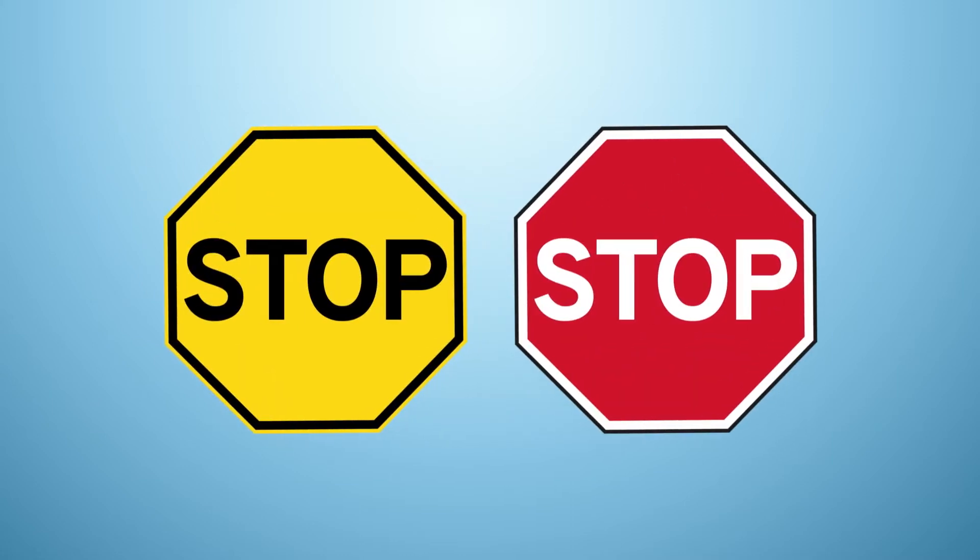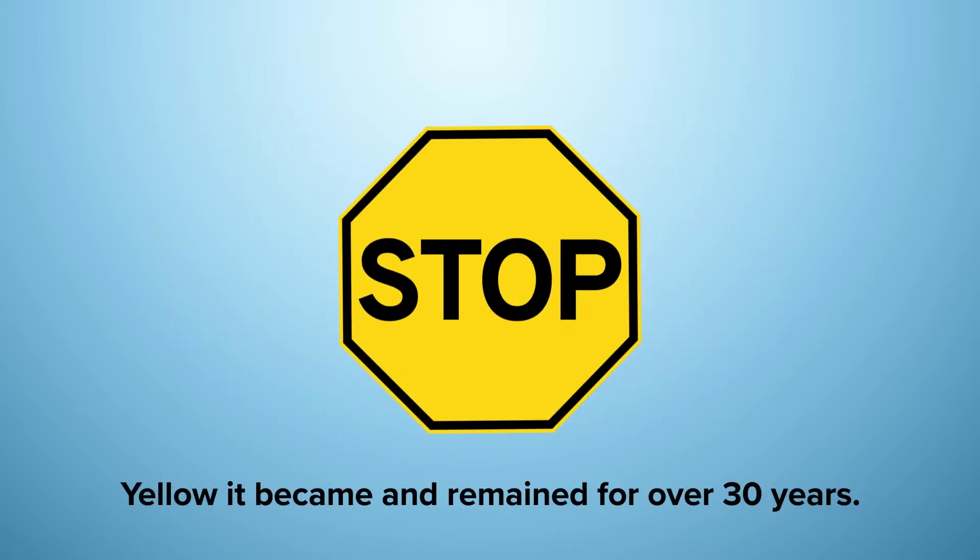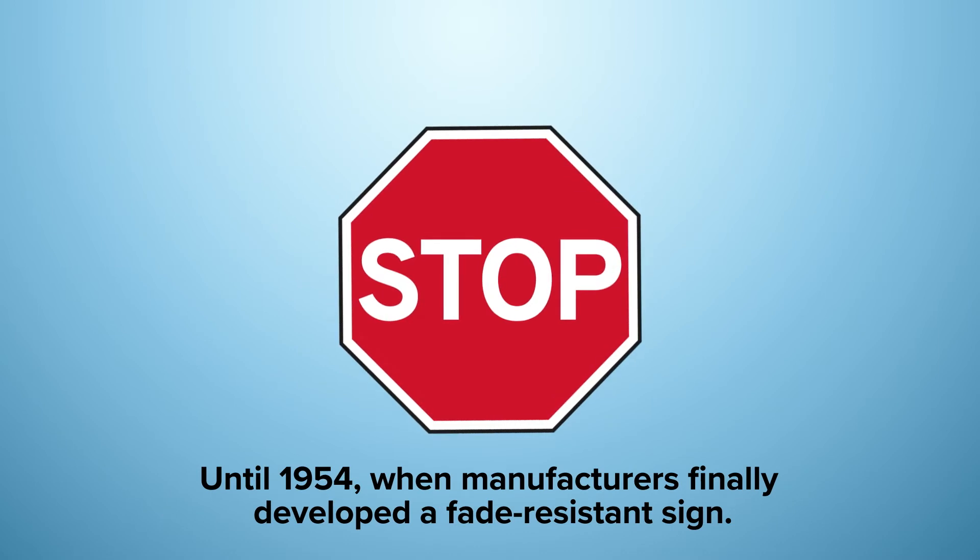Red was the first color of choice. However, at that time, there was no red dye in existence that wouldn't fade over time. So, yellow it became, and remained for over 30 years, until 1954, when manufacturers finally developed a fade-resistant sign that red became the stop sign's permanent color.